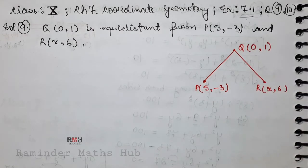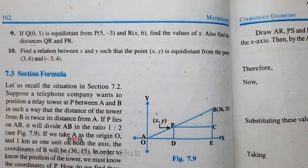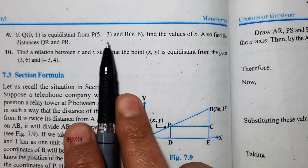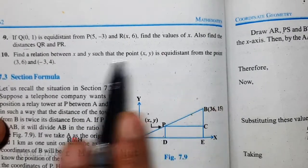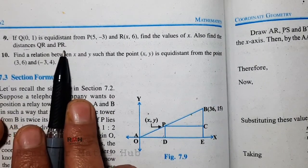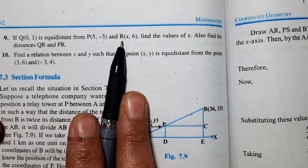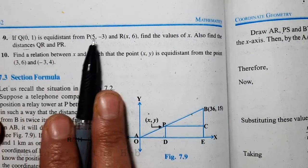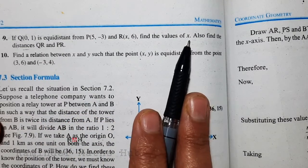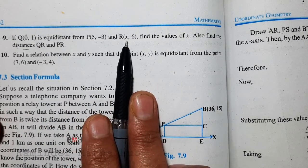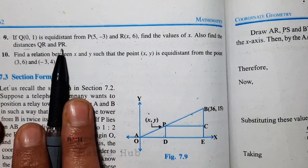First of all, question 9 is: if Q(0,1) is equidistant from P(5,-3) and R(x,6), find the values of x. Also find the distances QR and PR. We have point Q which is equidistant from P and R, meaning the distance between Q and each of those two points is equal. We need to find x, which is R's coordinate, and then find QR and PR distances.